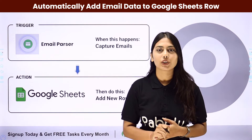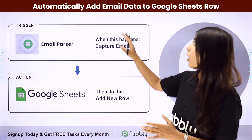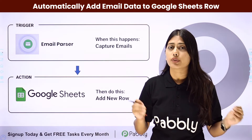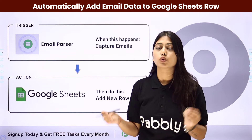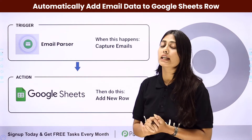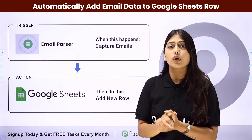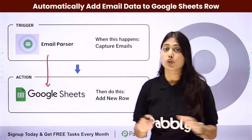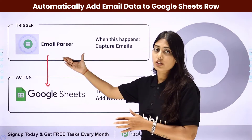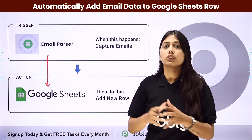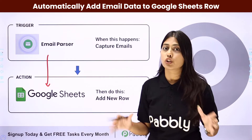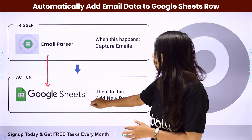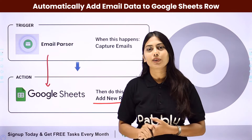Hello everyone. In this video we are going to learn how you can automatically add email data to Google Sheet rows, which means that whatever email you receive, the body of that specific email can be used to add a new row in your Google Sheet. We are going to create an automation with Pabbly Connect to integrate these two applications so that whenever a new email is received, that data can be added to Google Sheet. The trigger will be email parser and the action will be to add a new row in Google Sheets.